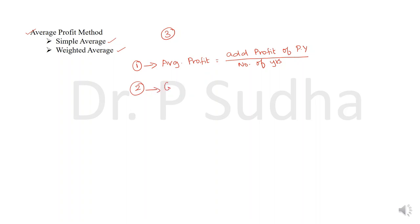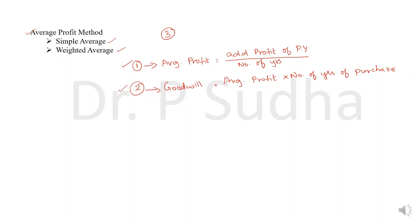After calculating the average profit, your next step is to calculate goodwill. Goodwill is calculated as average profit multiplied by the number of years of purchase. So, calculation of goodwill under the simple average method is very easy: step one, calculate average profit; step two, multiply by the number of years of purchase.